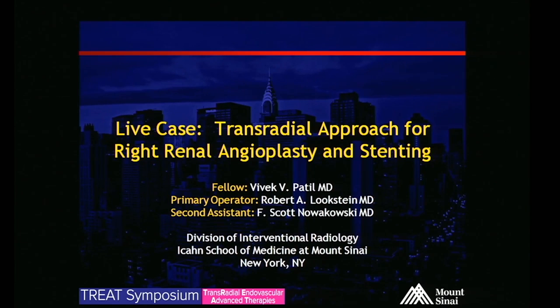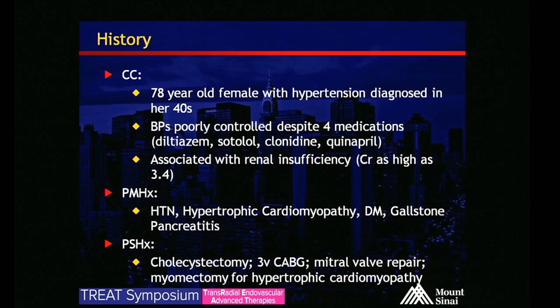We have a case of transradial approach for right renal angioplasty and stenting. Our case is a 78-year-old female with hypertension diagnosed in her 40s, and over that time it's been poorly controlled despite four medications: diltiazem, sotalol, clonidine, and an ACE inhibitor. She has renal insufficiency with creatinine as high as 3.4. Her other history includes hypertrophic cardiomyopathy, diabetes, and a history of gallstone pancreatitis.